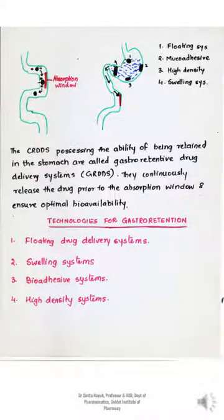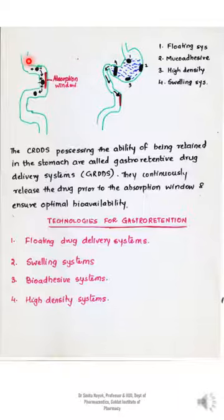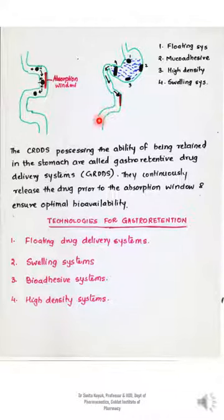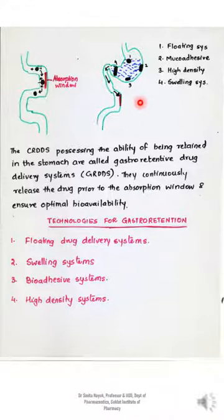An important observation is that generally the drug encounters what is called an absorption window, where the maximum amount of drug is absorbed. Before and after this region the amount absorbed is minimal, making it necessary that the drug remains at the absorption window region for a long period of time. One approach is to ensure the drug remains in the stomach for a long time, from where it is gradually released and passes through the GI tract to be absorbed at its absorption window. Thus, prolonging gastric retention of a delivery system is desirable for achieving greater therapeutic benefit.